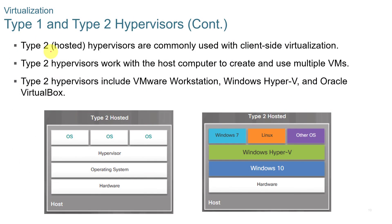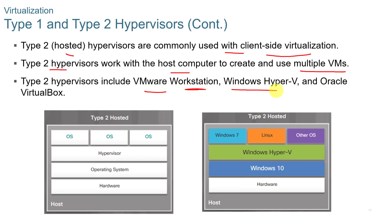Type two hypervisors are hosted and are commonly used with client-side virtualization. Type two hypervisors work with the host computer to create and use multiple VMs. These include VMware Workstation, Windows Hyper-V, and Oracle VirtualBox.